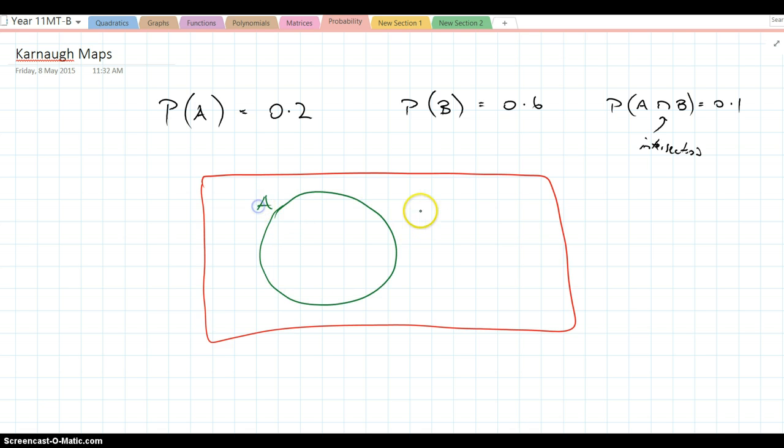So that's event A there. This is event B here. We have an overlap because we're allowing for this intersection A and B. We always fill in that intersection area first, so it's 0.1 in there. The probability of A is 0.2, so I've already got 0.1 covered, so I must have 0.1 there. Probability of B is 0.6, so that's 0.5, so they add up to 0.6. And then I add them together, I've got 0.7, so there must be 0.3 that is neither A or B.